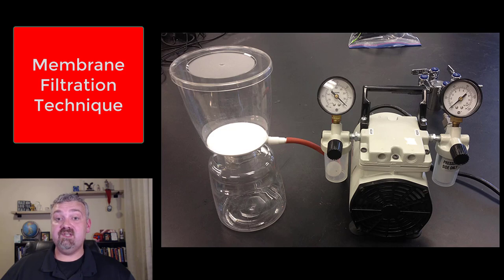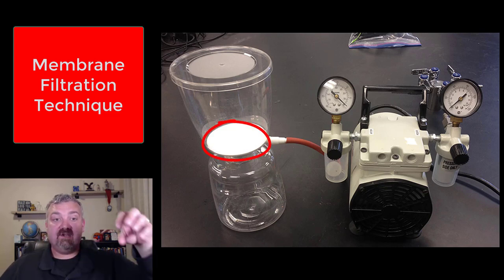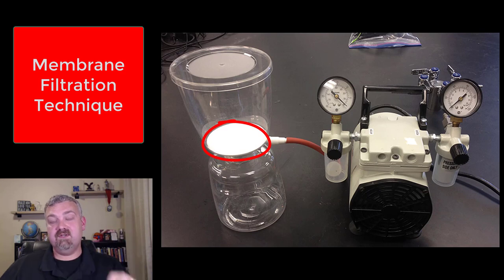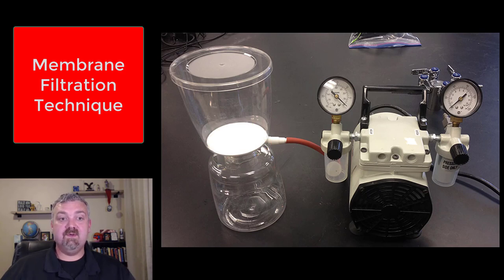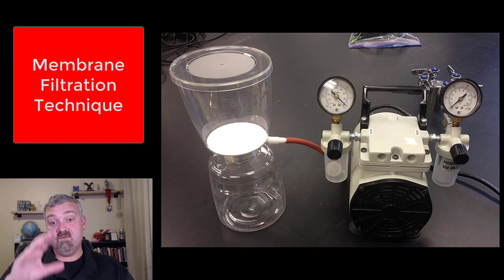So what you would do with the membrane filtration technique is, as you're running your liquid or whatever you're testing through this machine, the filter captures the microorganisms. So when you're done you take what's on this membrane filtration paper after you've run your sample through it and you grow that, you culture that.